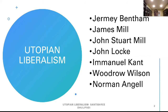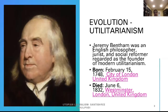Utopian Liberalism is early liberalism, and you had Jeremy Bentham, James Mill, John Stuart Mill, John Locke, Immanuel Kant, Woodrow Wilson, and Norman Angell. We'll have a look at what are the major ideas and how did they influence the study of international relations. We will first start with the evolution of what we call utilitarianism.